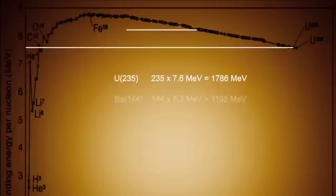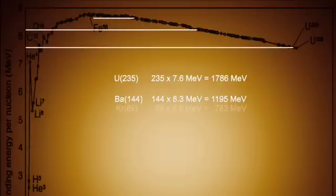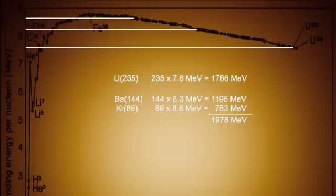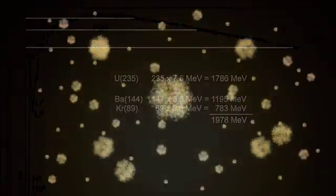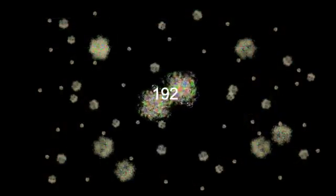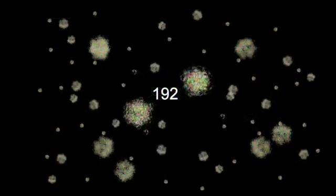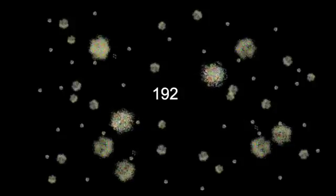While barium-144 has 8.3, and krypton-89 has 8.8, and the extra neutrons have no binding energy. So every time a nucleus of uranium fissions, we get about 192 MeV of energy.